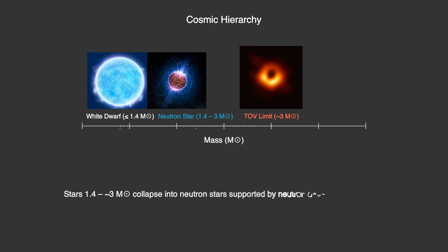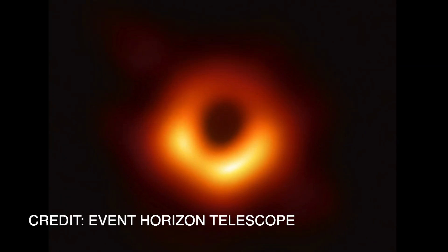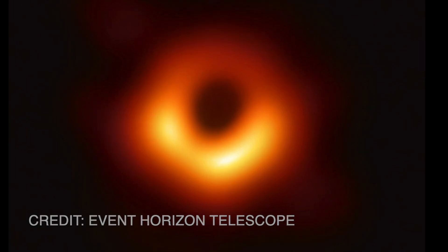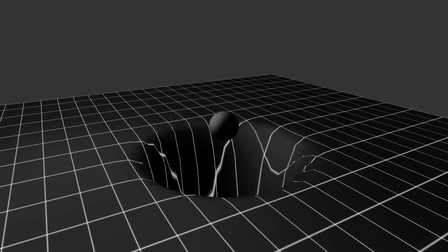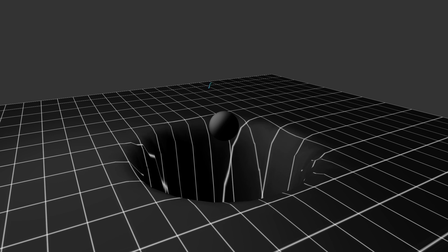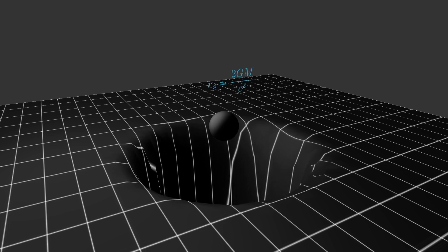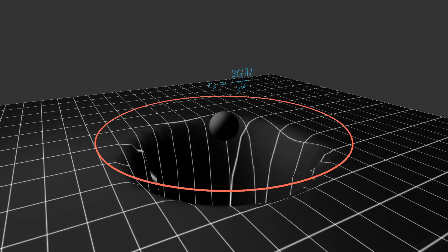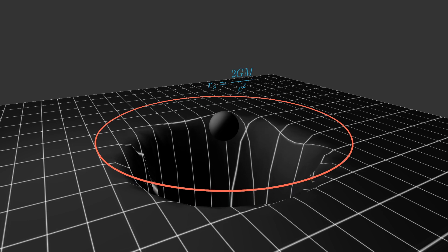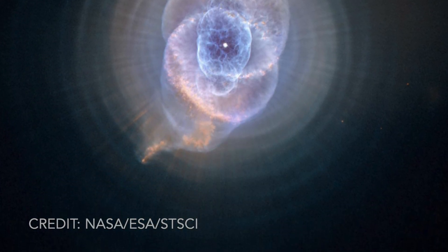If a stellar core exceeds the TOV limit, even neutron degeneracy pressure cannot resist gravity, and the star must collapse into a black hole, an object predicted decades earlier by Karl Schwarzschild. These limits demonstrated how Schwarzschild's work was not just a theoretical curiosity, but a fundamental description of the universe's most extreme objects, governing the final fate of dying stars.